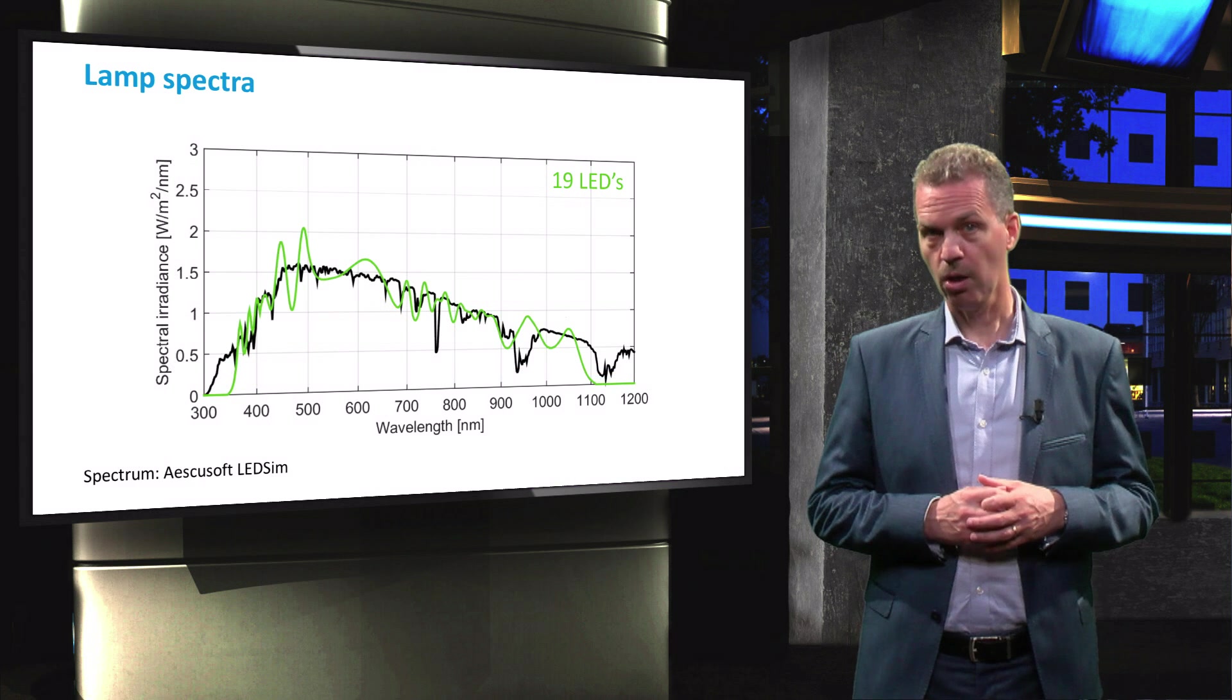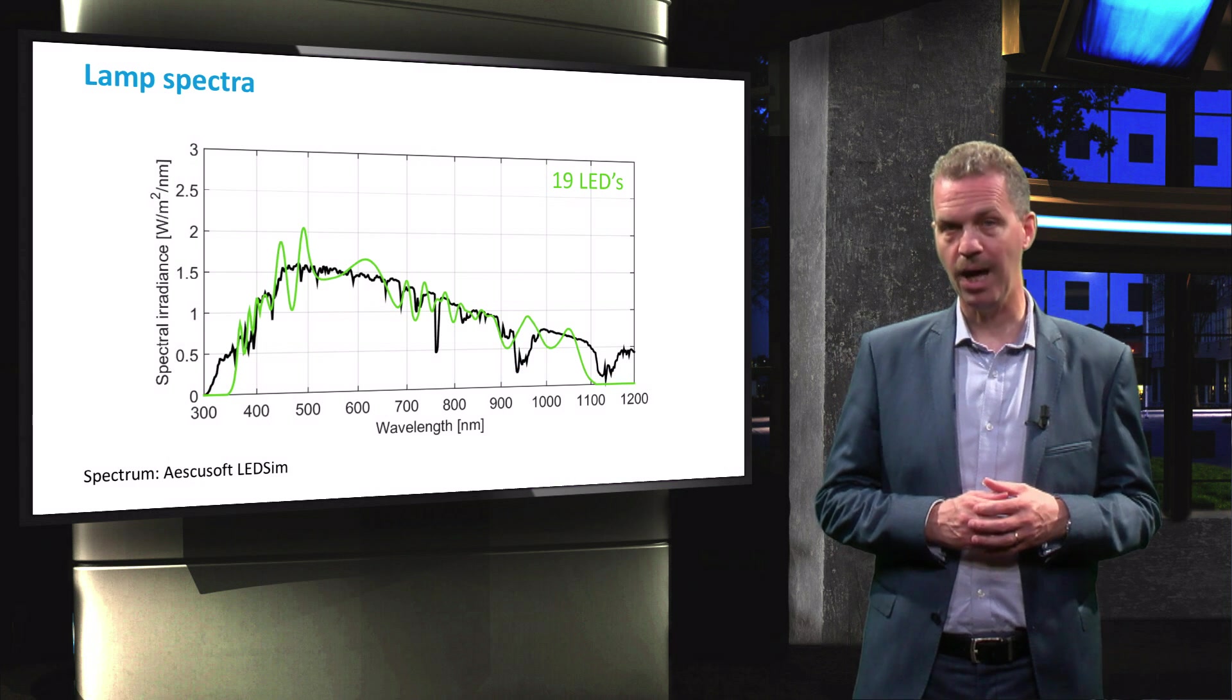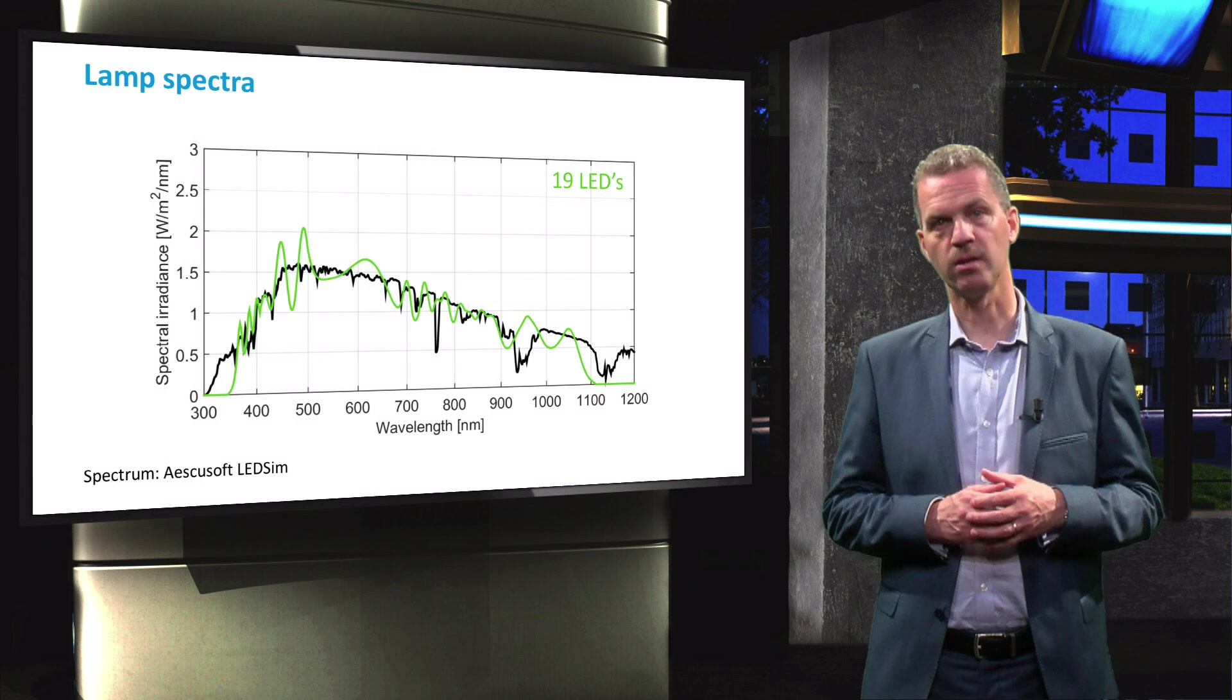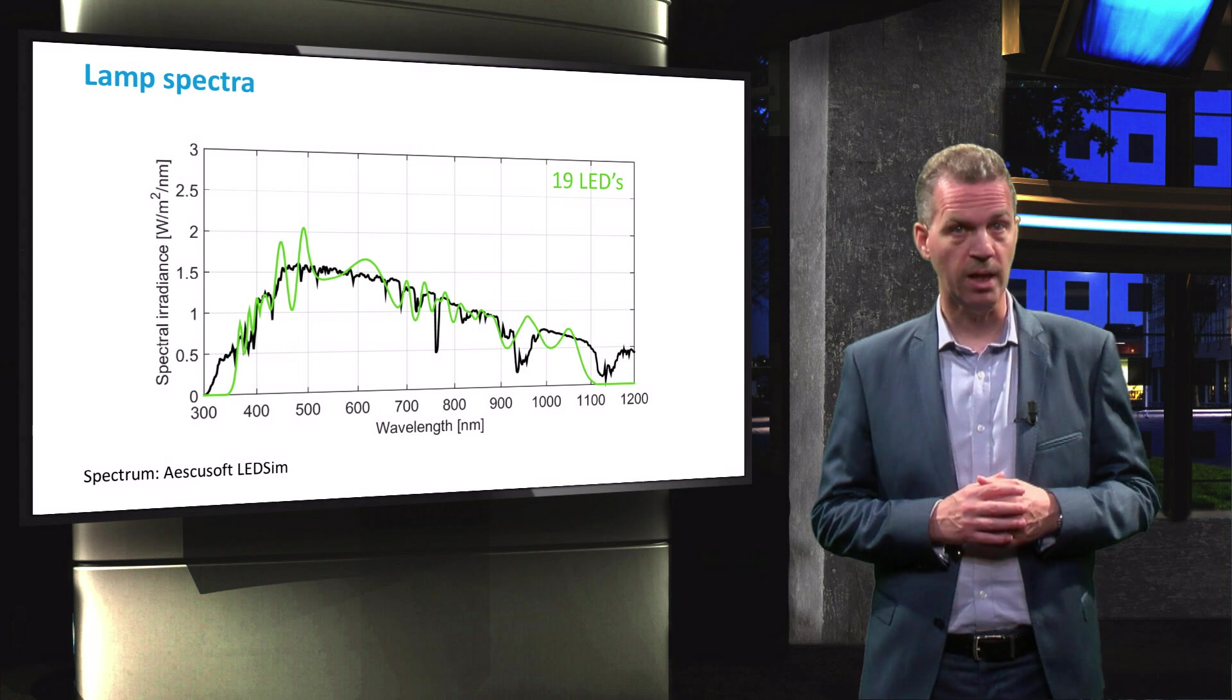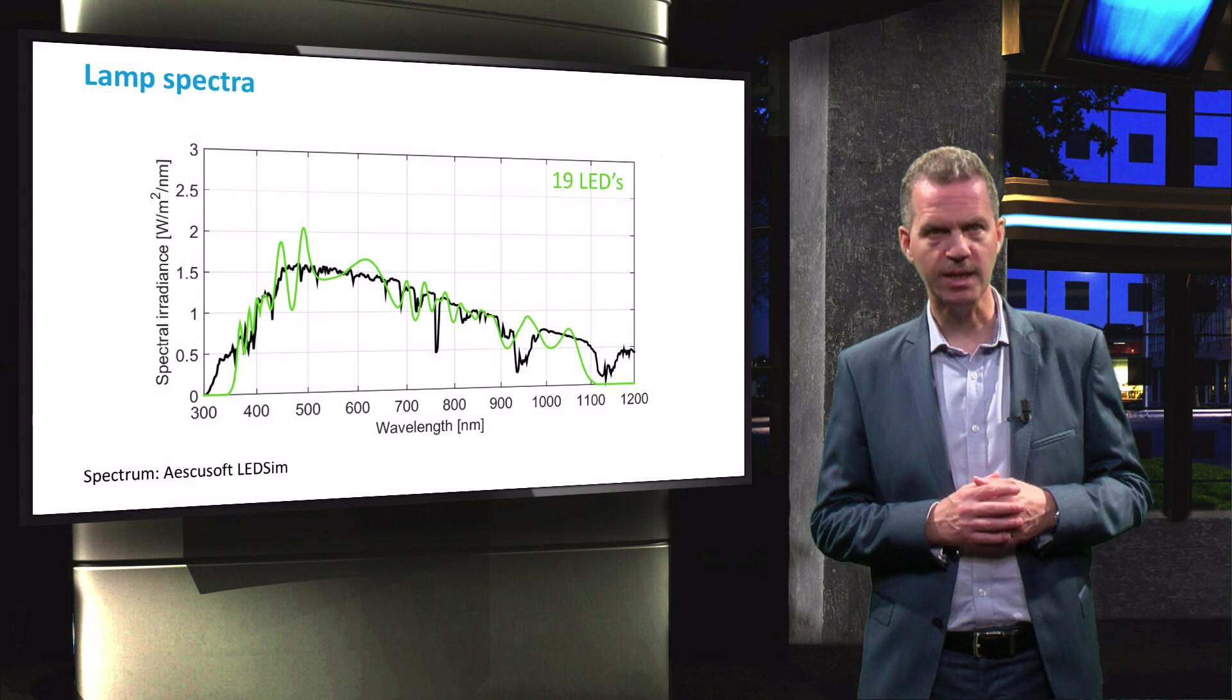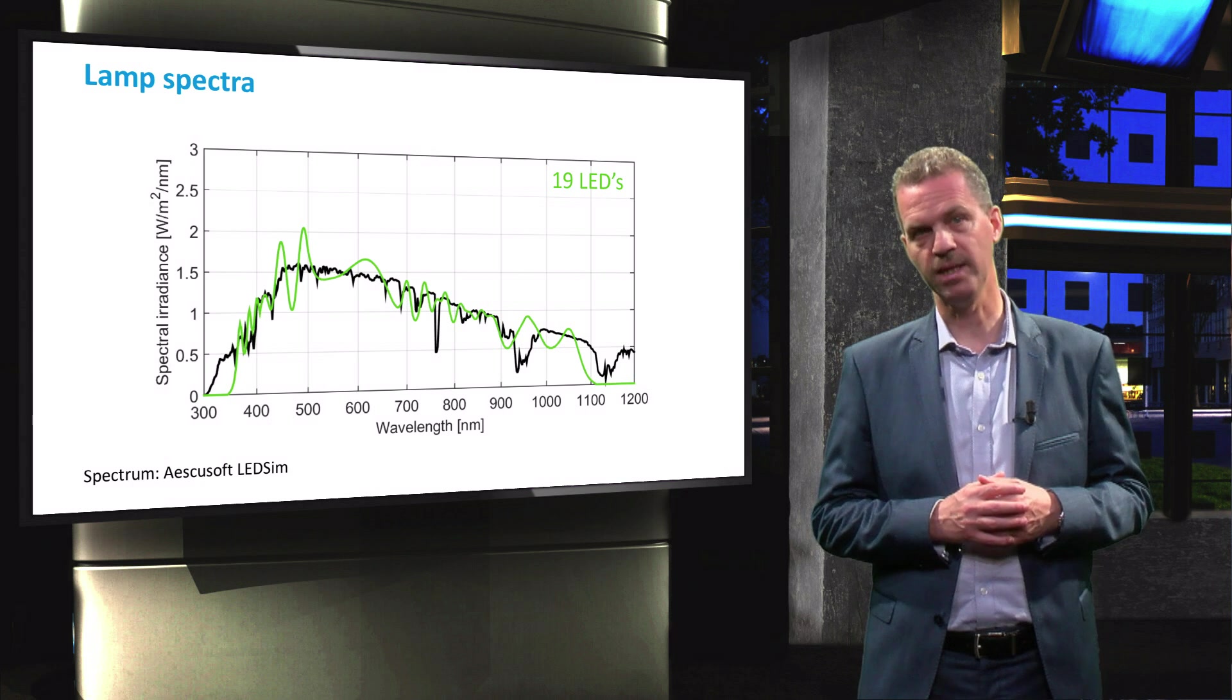More frequently, different colors of high power LEDs are used to build class AAA solar simulators. This spectrum shown here is a combination of 19 different LED types placed in an array.